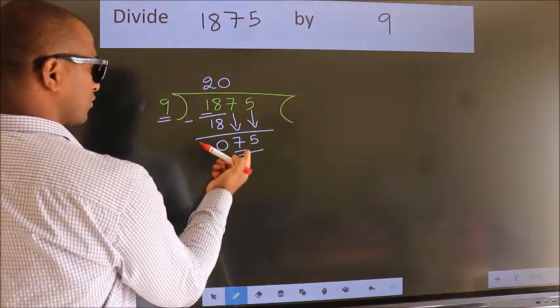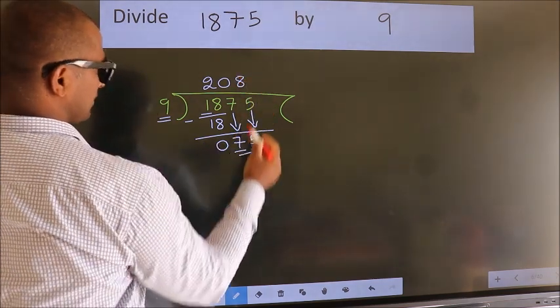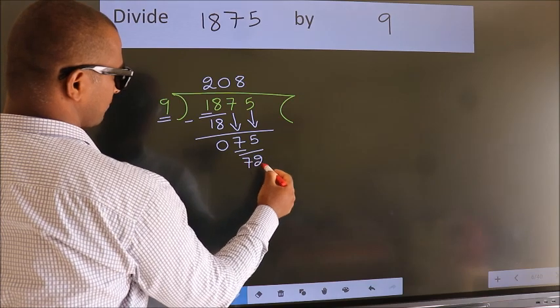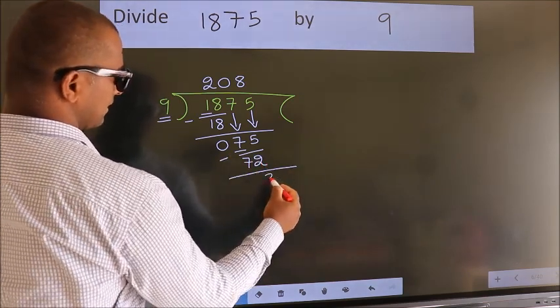A number close to 75 in the 9 table is 9 times 8, 72. Now we subtract. We get 3.